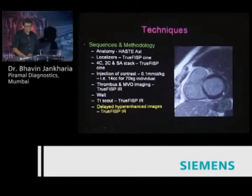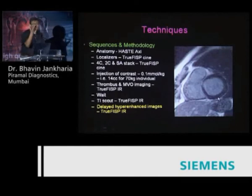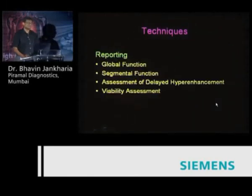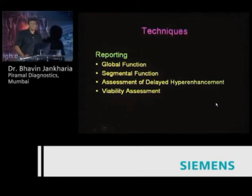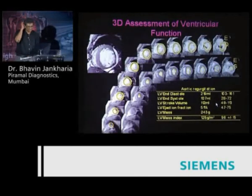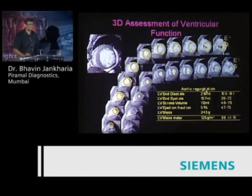How do you know the images are good? The black myocardium should be completely nulled so that any white infarct is very well seen. That's how the study should be done. If the patient is cooperative it should take about 35 minutes on the Sonata, or about 25 minutes on a faster machine like the Avanto. For reporting: global function, segmental function, assess the delayed hyper-enhancement, and then do the viability assessment. Train your technicians how to measure ejection fraction.